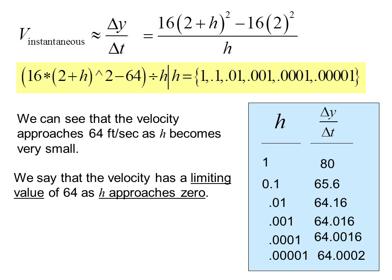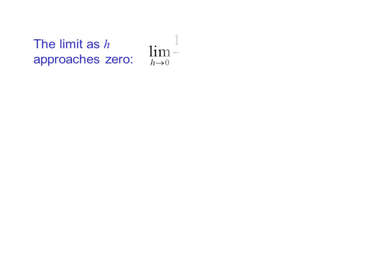So the velocity approaches 64 feet per second as h becomes very small. We say that the velocity has a limiting value of 64 as h approaches zero. Note that h never actually becomes zero. The limit as h approaches zero is written as: limit as h approaches zero of 16(2+h)² minus 16(2²), all over h.